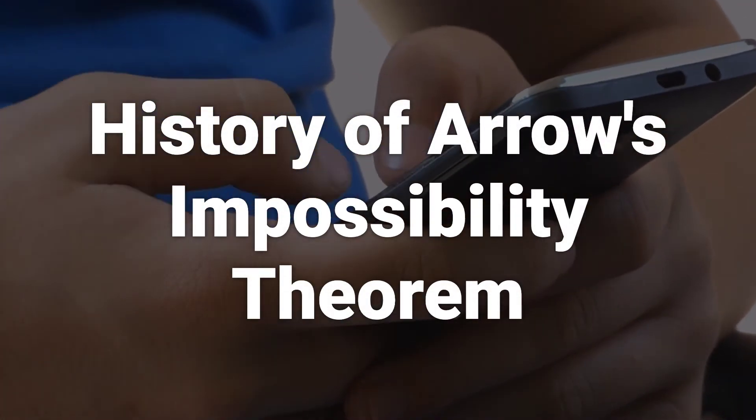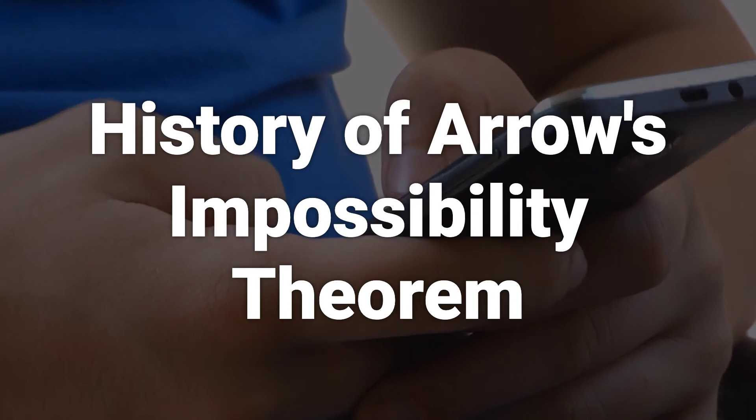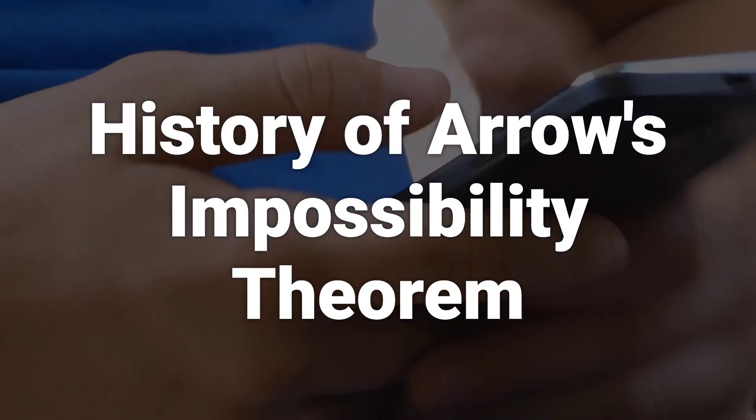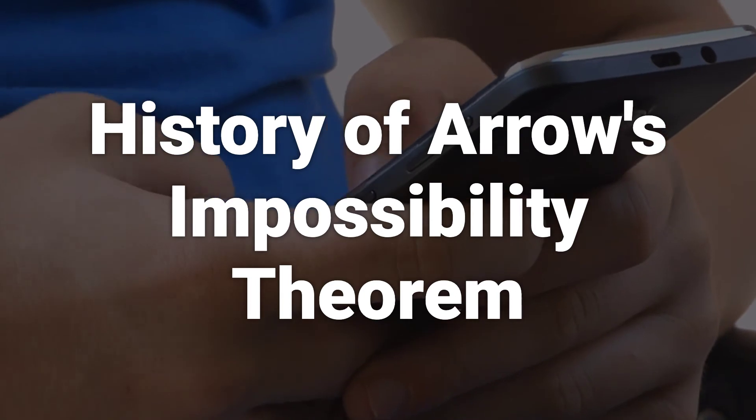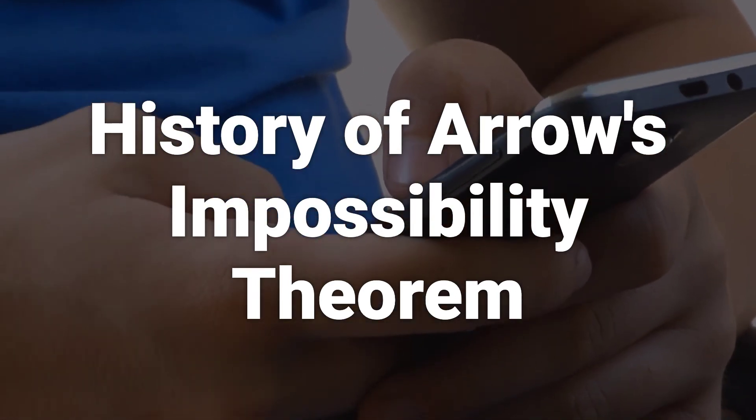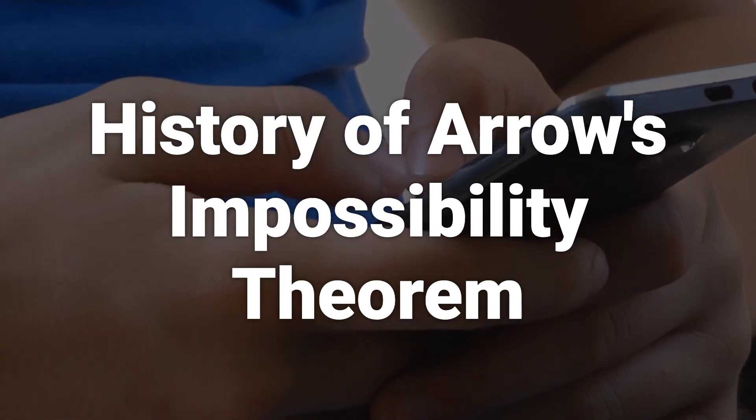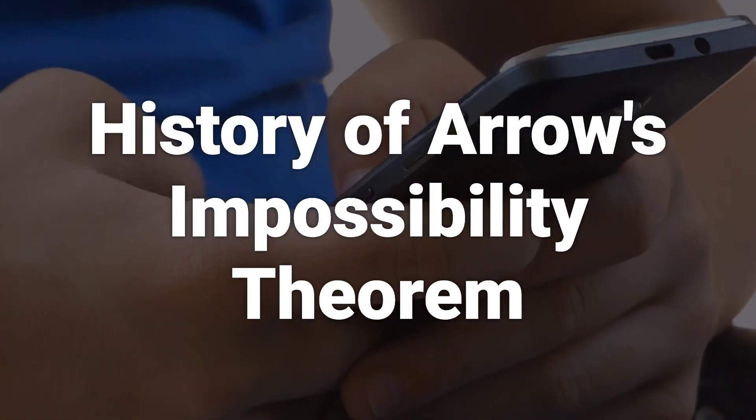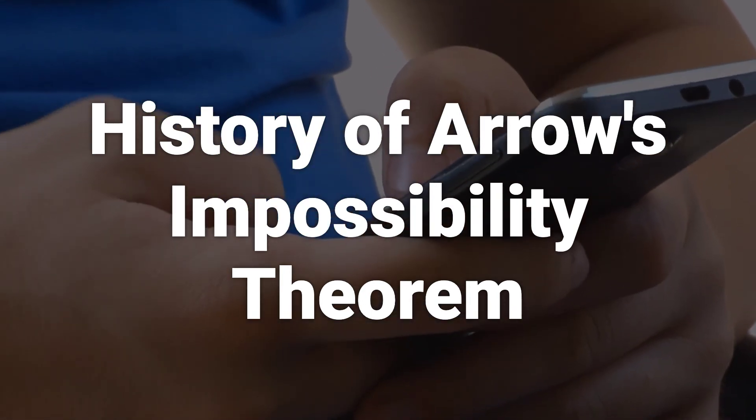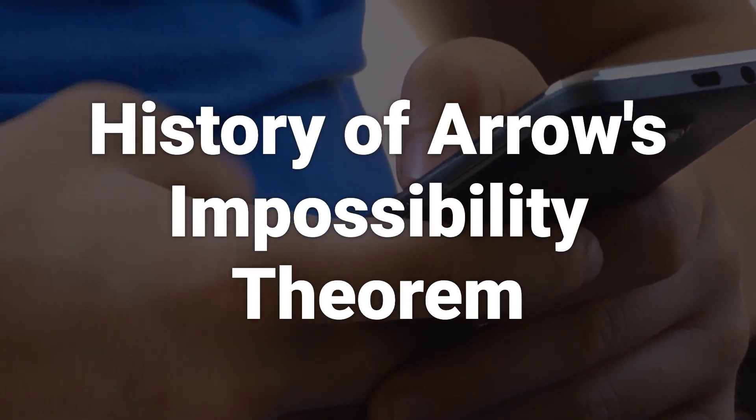The theorem is named after economist Kenneth J. Arrow. Arrow, who had a long teaching career at Harvard University and Stanford University, introduced the theorem in his doctoral thesis and later popularized it in his 1951 book Social Choice and Individual Values. The original paper, titled A Difficulty in the Concept of Social Welfare, earned him the Nobel Memorial Prize in Economic Sciences in 1972.